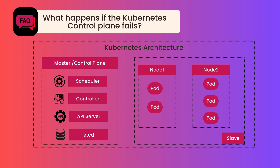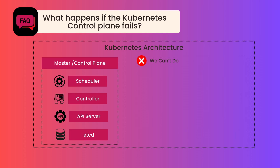Coming to the question: what happens if the Kubernetes control plane fails? The workloads running on Kubernetes continue to run — they are not disturbed. But certain operations we can't do inside the cluster. For example, if I want to deploy a new application, this happens by sending requests to the API server. Because it's not there, we can't do that. If I want to delete a pod, update a pod, or create a pod, these things we cannot do.